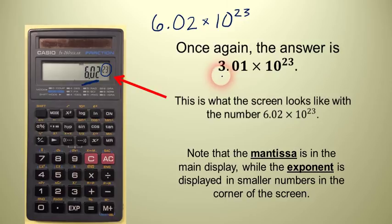And that you write the answer as 3.01 times 10 to the 23rd. Don't write it like this. Don't do this. Okay? Even though that's what you see on the screen of your calculator, that's not what you want to write down as the answer. It's not the same thing.